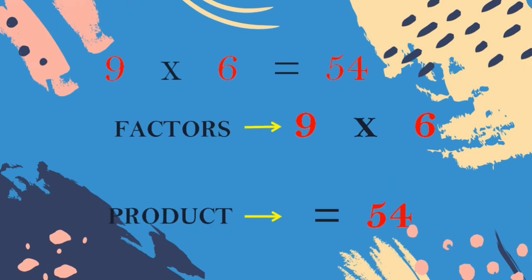9 6s = 54. The 9 and 6 are the factors. The answer 54 is the product. All of them understood, children? Factors, product. Any doubt in this? Factors means what you are going to multiply — that is the factors. The answer of the multiplication is the product.